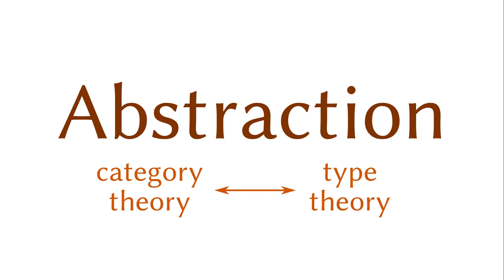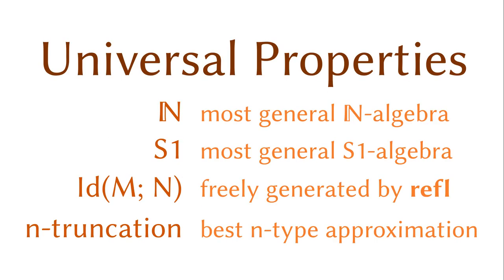So, how does category theory describe an object without referring to its internals? The most common method is through universal properties as we did for the singleton sets earlier. The idea is to identify the types as the most general types satisfying some abstract properties.